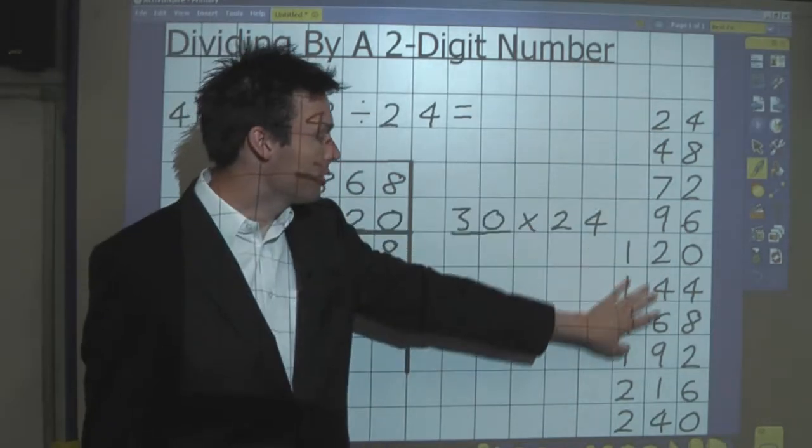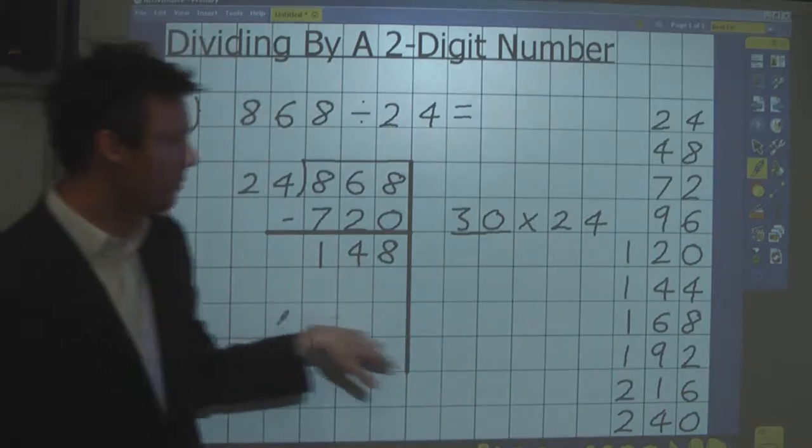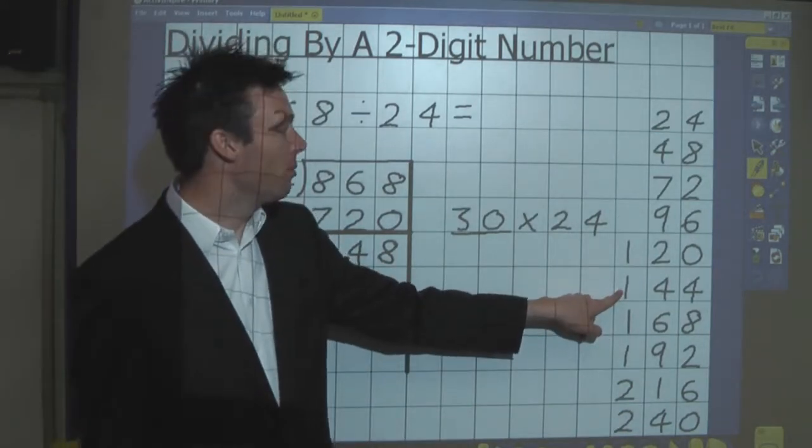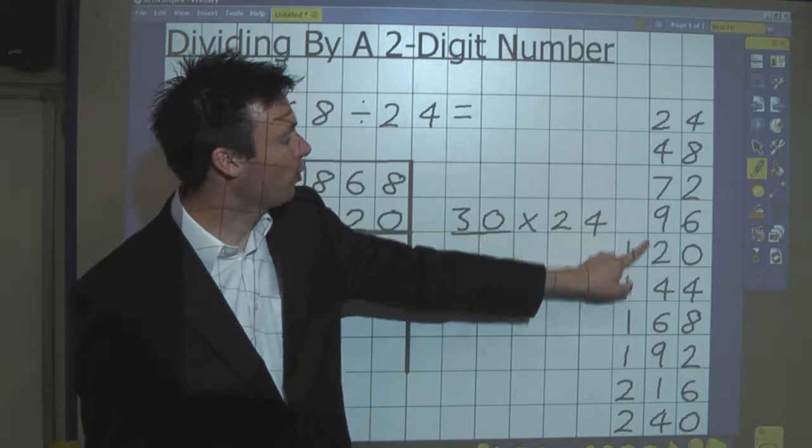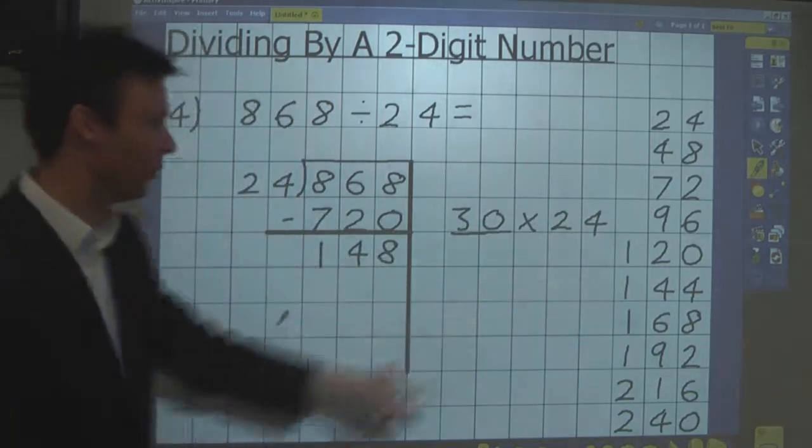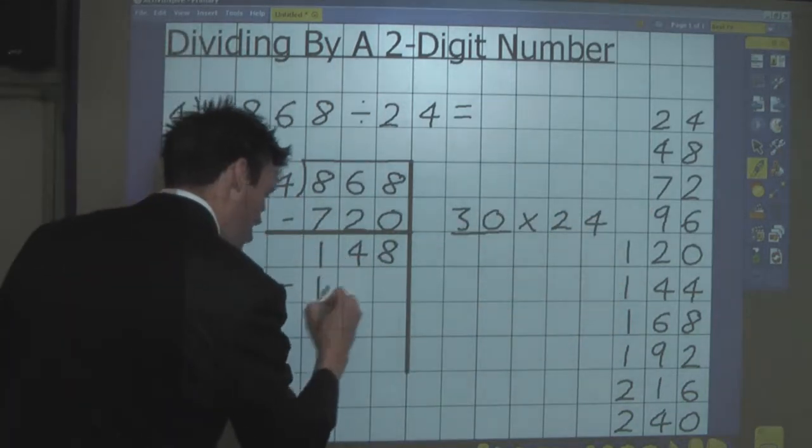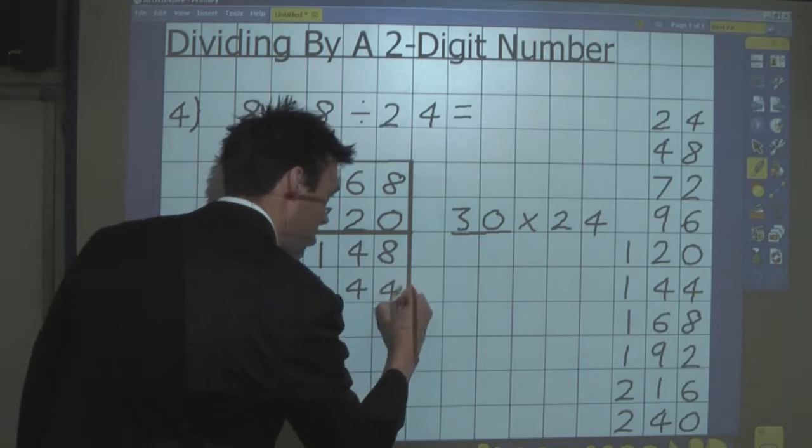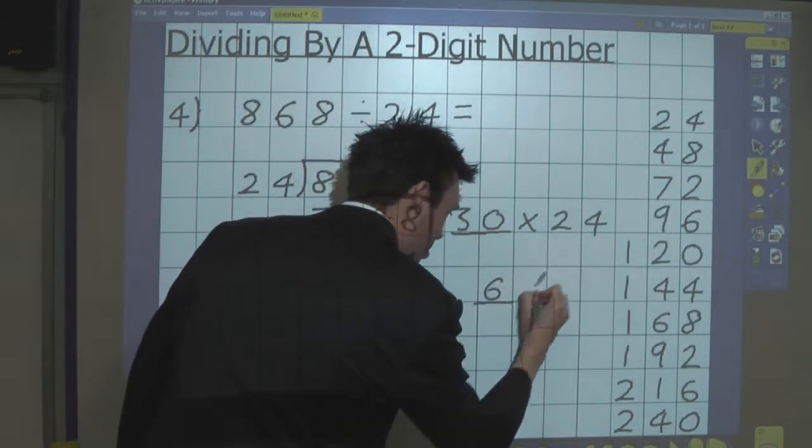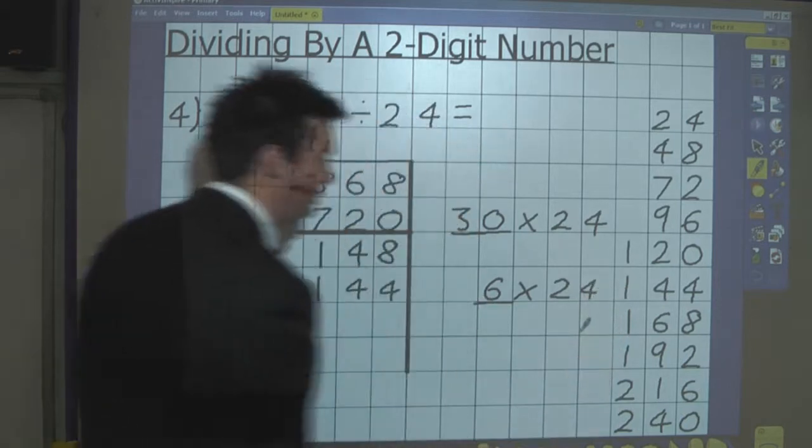We look again at the 24 times table to see what chunk we should take away. And 144 is the appropriate answer, which is 6 lots of 24. So we take away 144, which is 6 lots of 24.